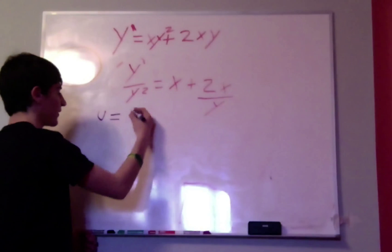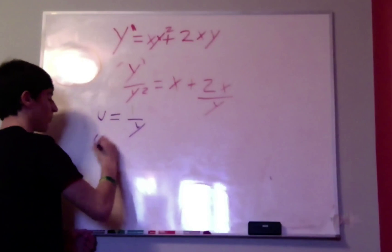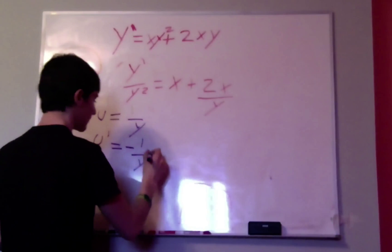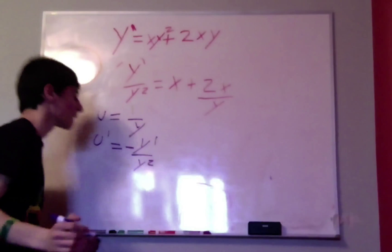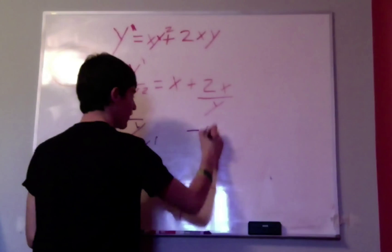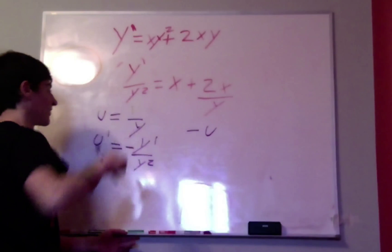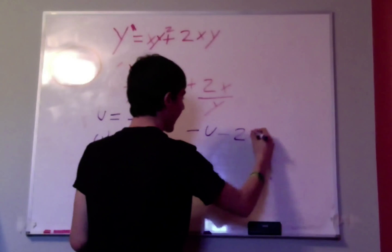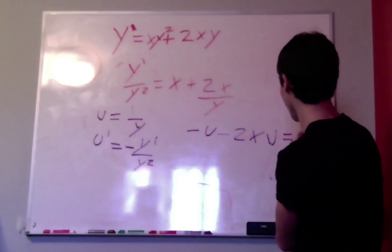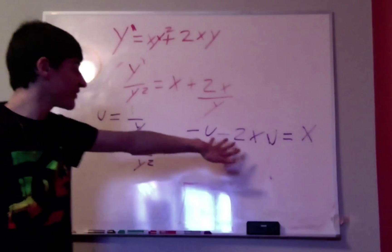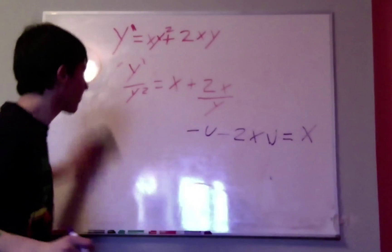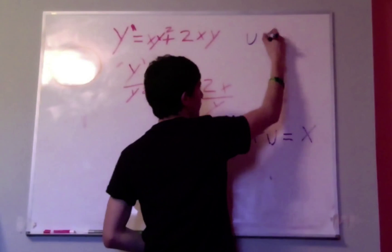So you have y prime over y squared is equal to x plus 2xy divided by y squared, which makes this over y. Now we're going to let u equal 1 over y, because that's what we have here. So u prime is equal to negative 1 over y squared times y prime. We can see that we have that term there, but with a negative. So we have negative u prime minus 2xu is equal to x.